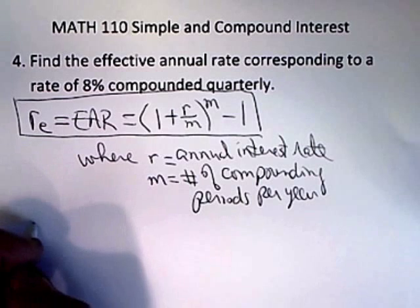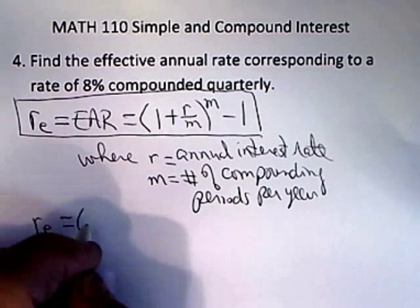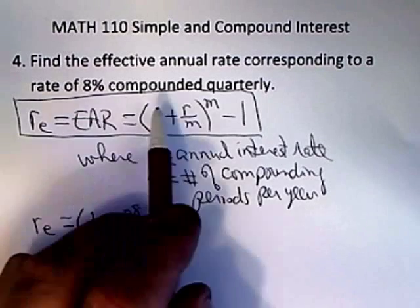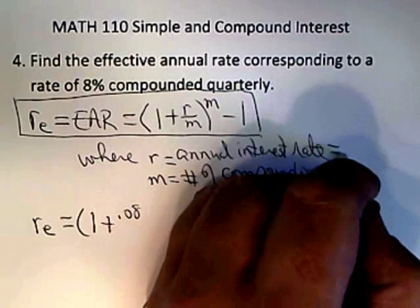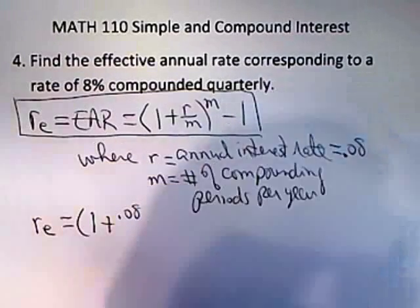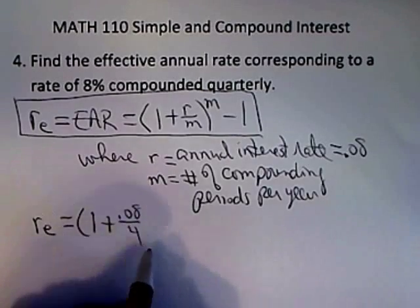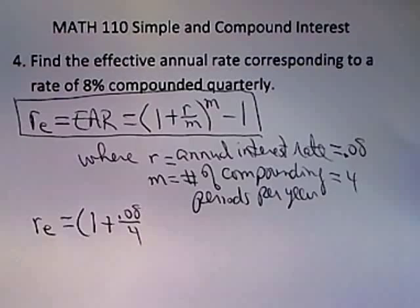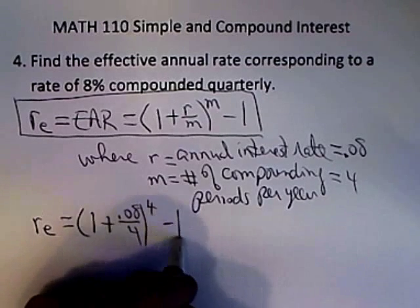So for this particular problem, the effective annual rate would be 1 plus .08, because the R is 8%, and as a decimal that would be .08, and M is 4 because it's quarterly, so M would be equal to 4. So that's raised to the power of M, and then subtract 1.